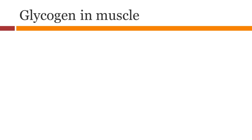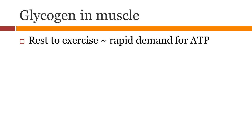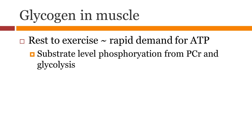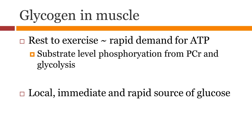When you start exercising, there is a rapid demand for ATP. This demand is satisfied by phosphocreatine and glycolysis. Thus, glycogen can provide a local, immediate and rapid source of glucose.